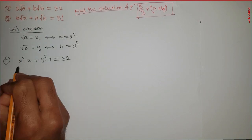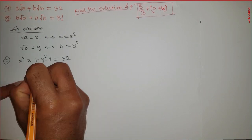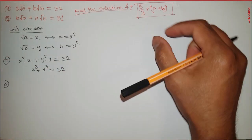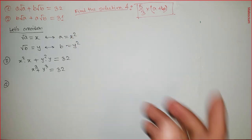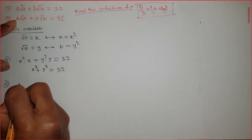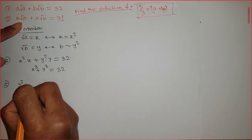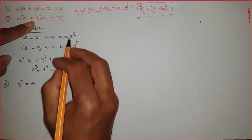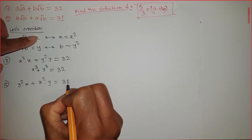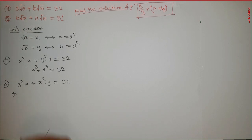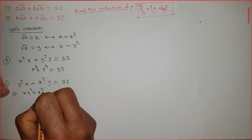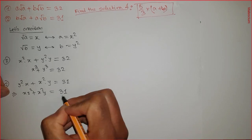Simplified, that gives us x³ + y³ = 32. Substituting a and b by x and y, the second equation becomes y² times x plus x² times y, which equals 31. We can write this as xy² + x²y = 31.